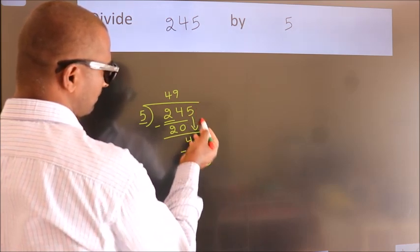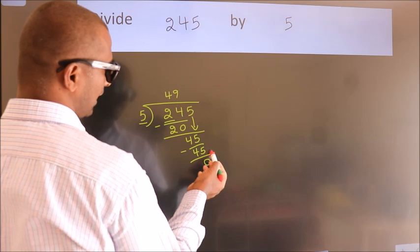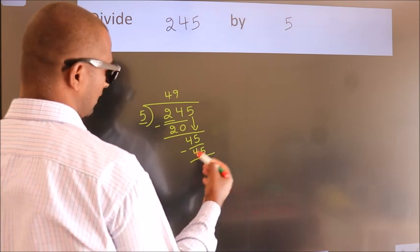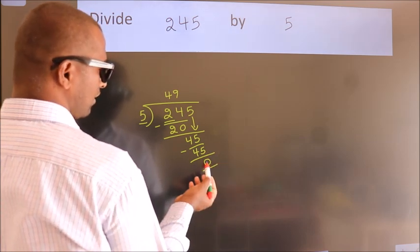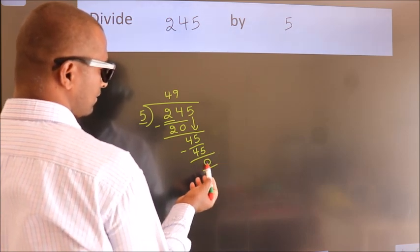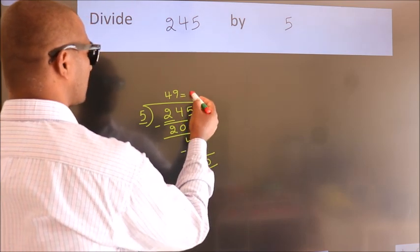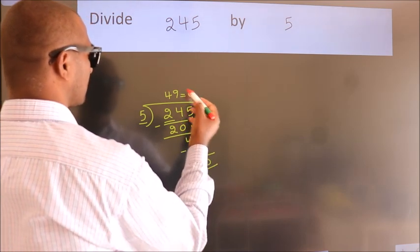After this, no more numbers to bring down, and we got remainder 0. So this is our quotient. We get 49.